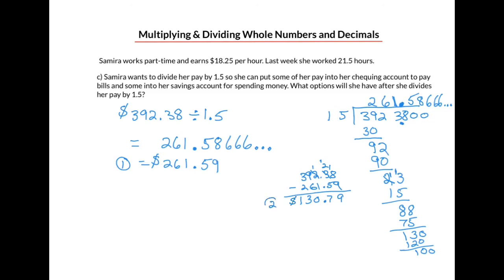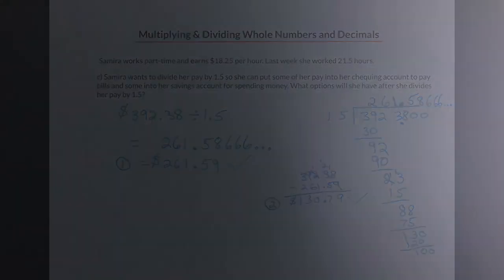So let's answer the question. Let's look at our options. Imagine we have containers for the checking account and the savings account. The first option would be to place 261.59 in the checking account and then 130.79 in the savings account. Or we could put the $130.79 into the checking account and the $261.59 into the savings account. Either way, the amounts add up to her total paycheck of $392.38. And there you go. Thanks for watching.